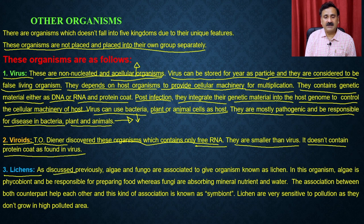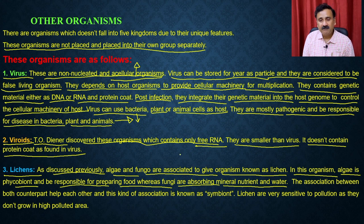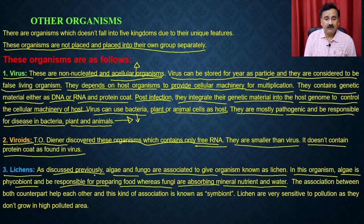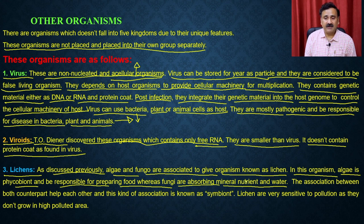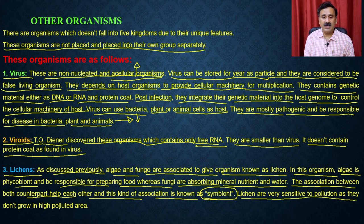Lichens are organisms formed by the association of algae and fungi. The algae (phycobiont) is responsible for preparing food, while the fungi absorb minerals and water. This association helps both partners — called a symbiotic relationship. Lichens are very sensitive to pollution and do not grow in high-pollution areas, which is why they are called pollution indicators. Pollution monitoring agencies check for the presence of lichens to determine pollution levels in a given area.